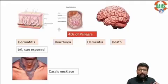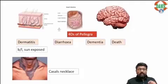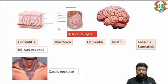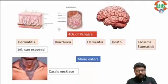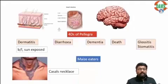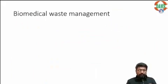Apart from dermatitis, diarrhea, dementia, and death, you can also see glossitis and stomatitis in cases of niacin deficiency. These are more commonly seen in maize eaters and also in jowar eaters.